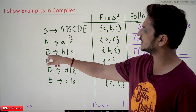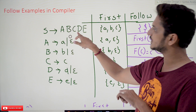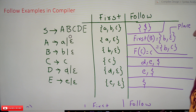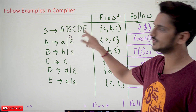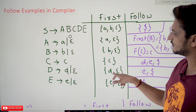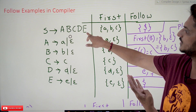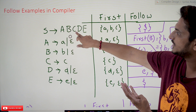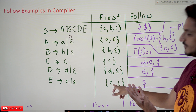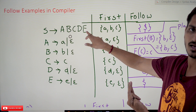Now we calculate FOLLOW of B. On the right-hand side, where is B? We find B here. FOLLOW of B means FIRST of C. FIRST of C is {c}, so the symbol is c. Similarly, FOLLOW of C — after C we identify D. FOLLOW of C means FIRST of D. FIRST of D is {d, epsilon}. If you place epsilon in place of D, the next symbol you encounter is E, so FOLLOW of C also includes FIRST of E. And if epsilon is placed there too, FOLLOW of C also includes FOLLOW of S.